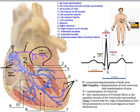The ventricles contract almost simultaneously, just like the atria, and this is represented on the ECG by the QRS complex. The atria also repolarize during the QRS complex, returning to a more negative resting potential. During the QRS complex we have depolarization of the ventricles and repolarization of the atria; however, because ventricular depolarization is so large, the atrial repolarization is overshadowed and we don't see it on the ECG.